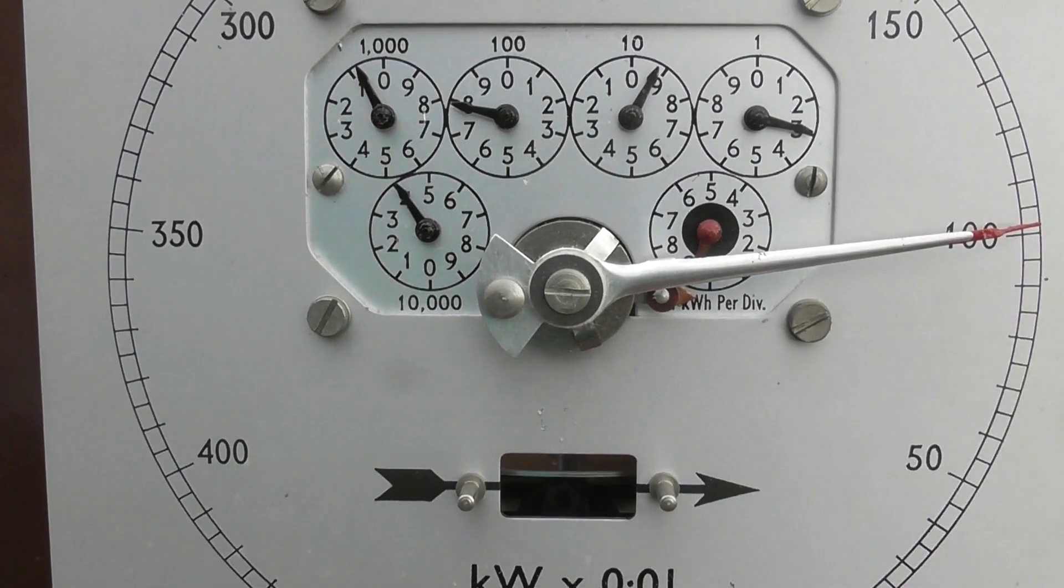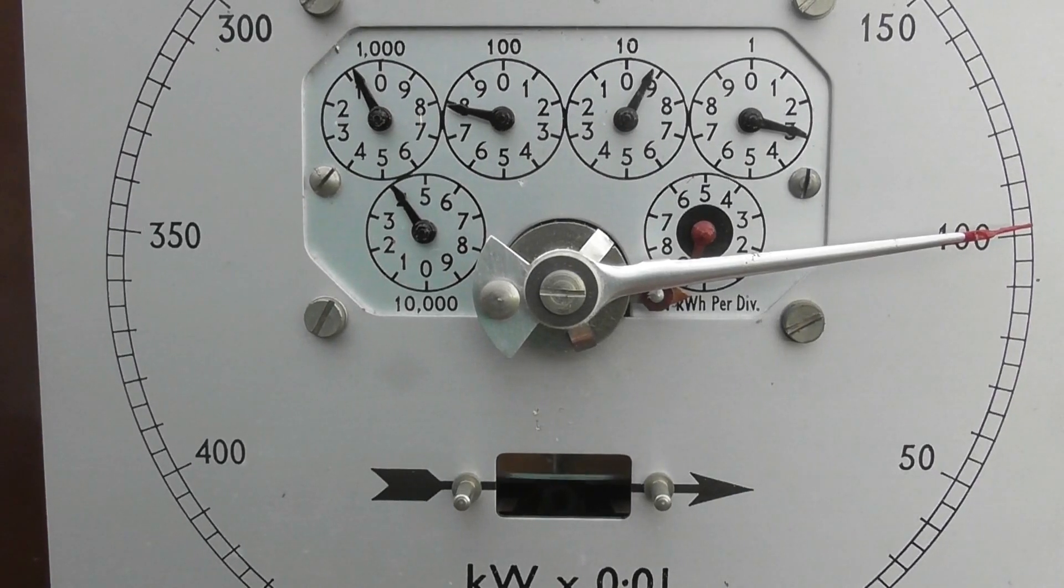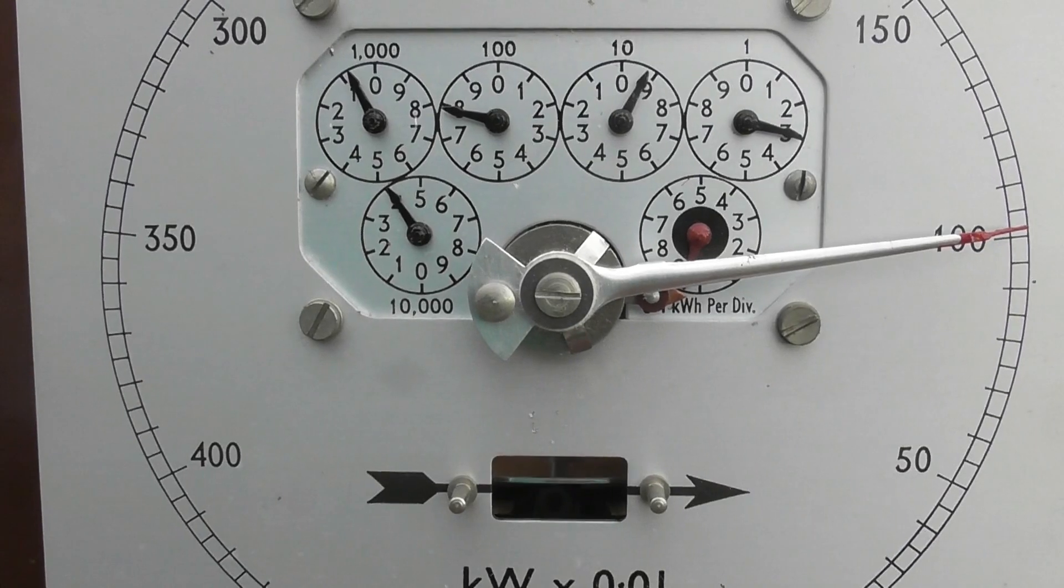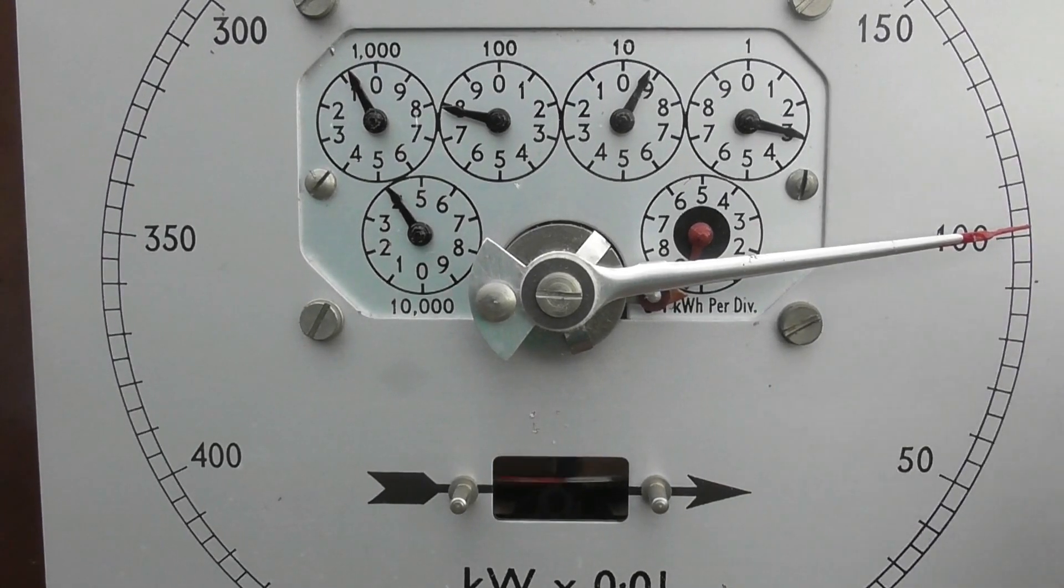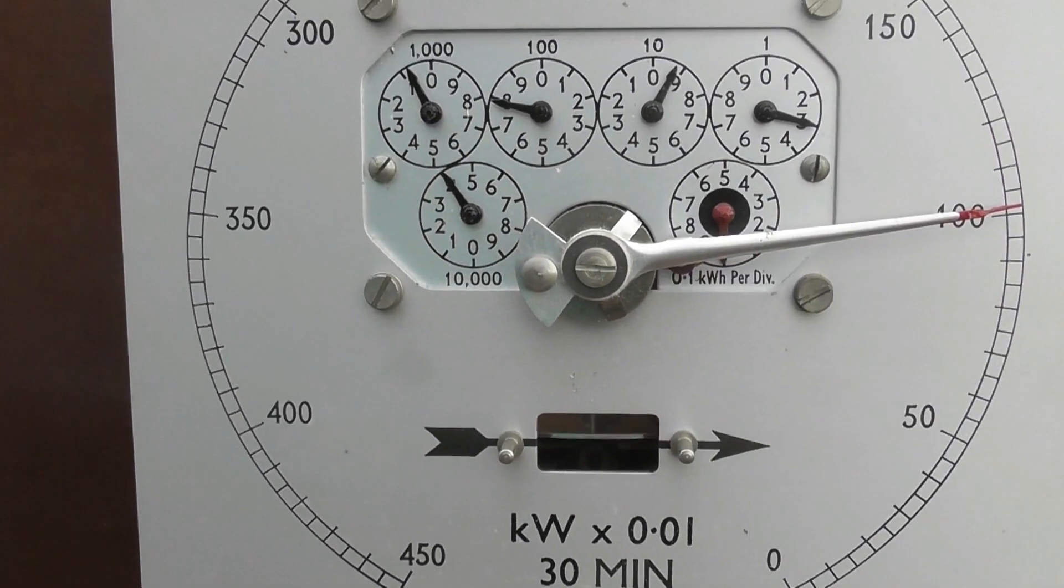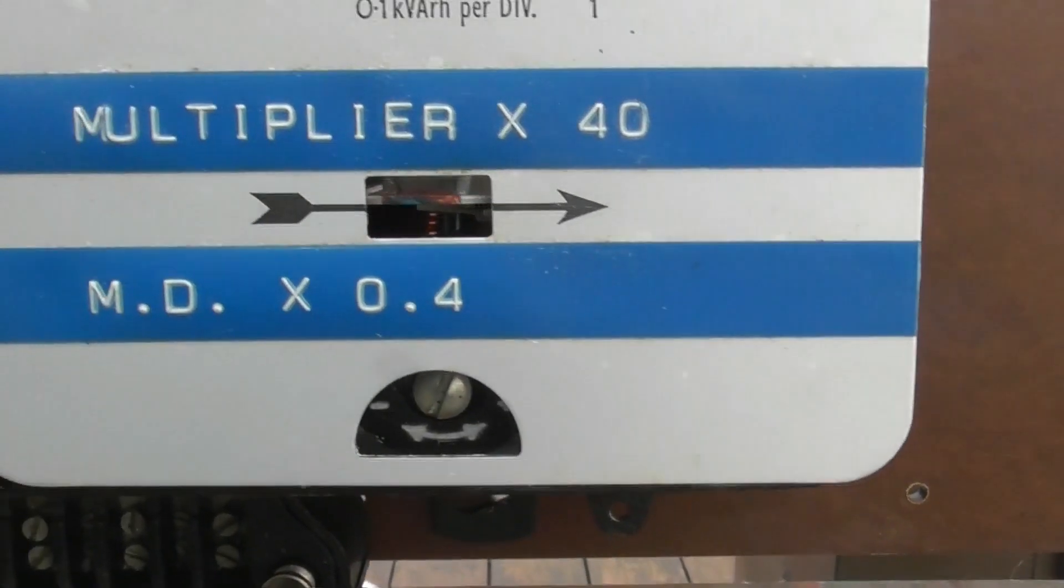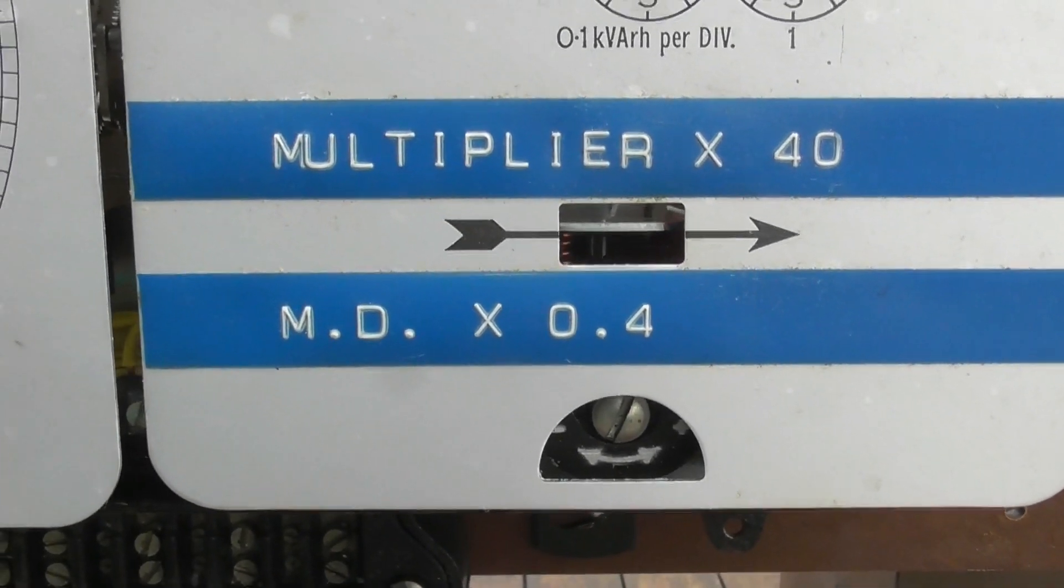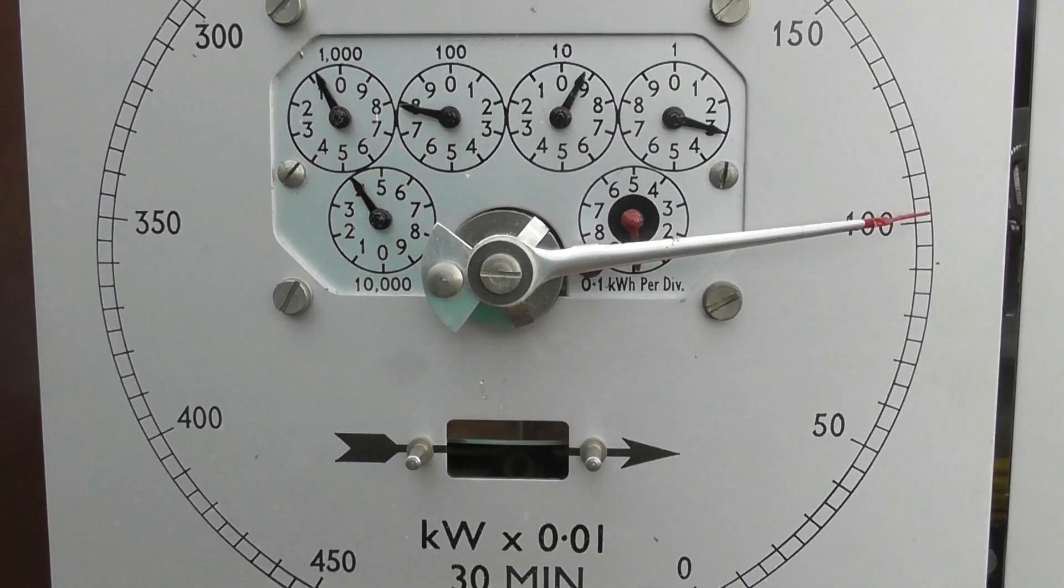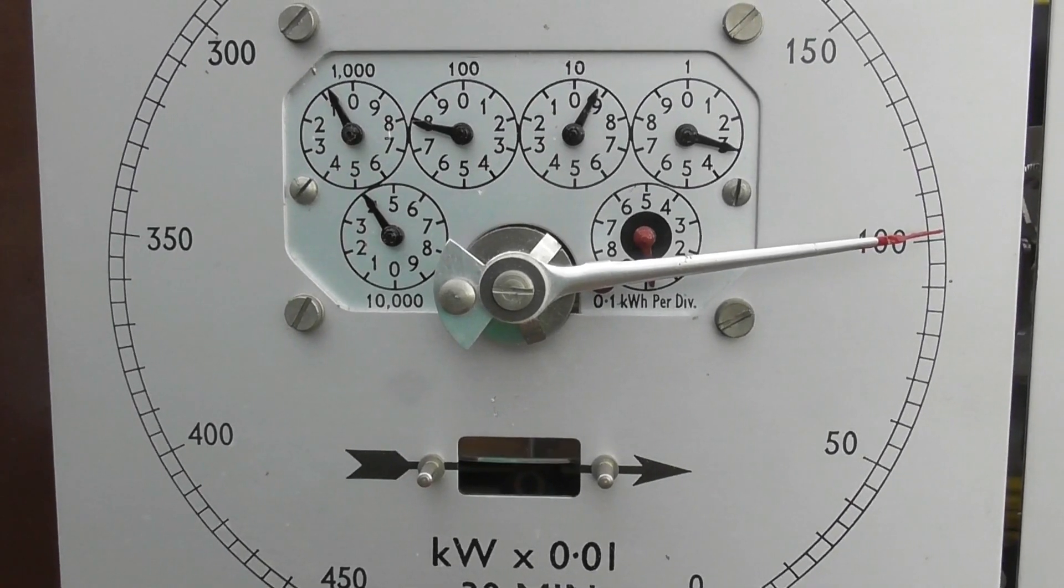The big demand pointer will remain where it is and then when the meter reader comes they can reset the pointer and take a note of the dial what it shows. Say for example this shows a hundred, one zero two or so. A hundred and the MDI is times 0.4, so if that meter shows a hundred, that would equate to 40 kilowatts.